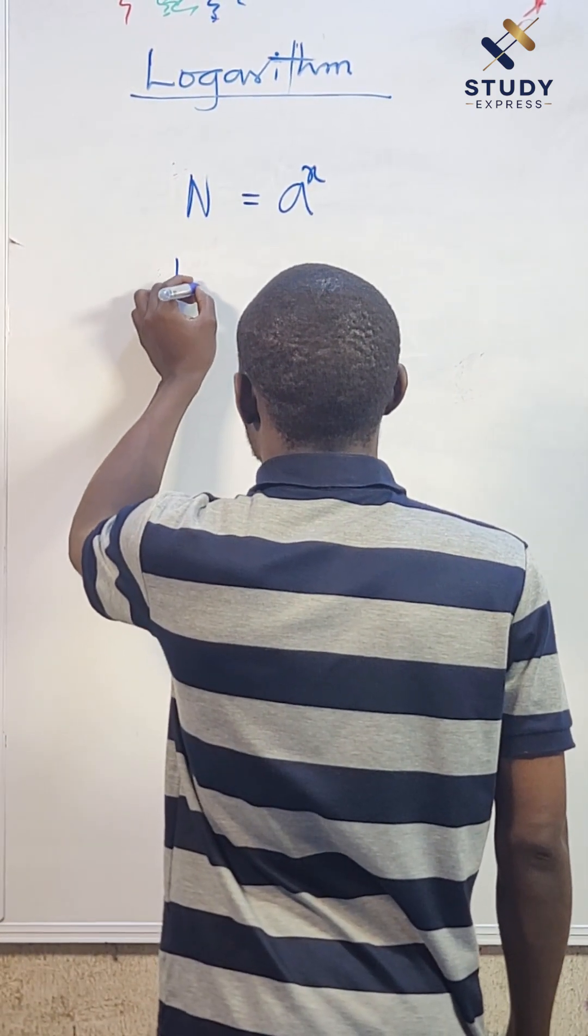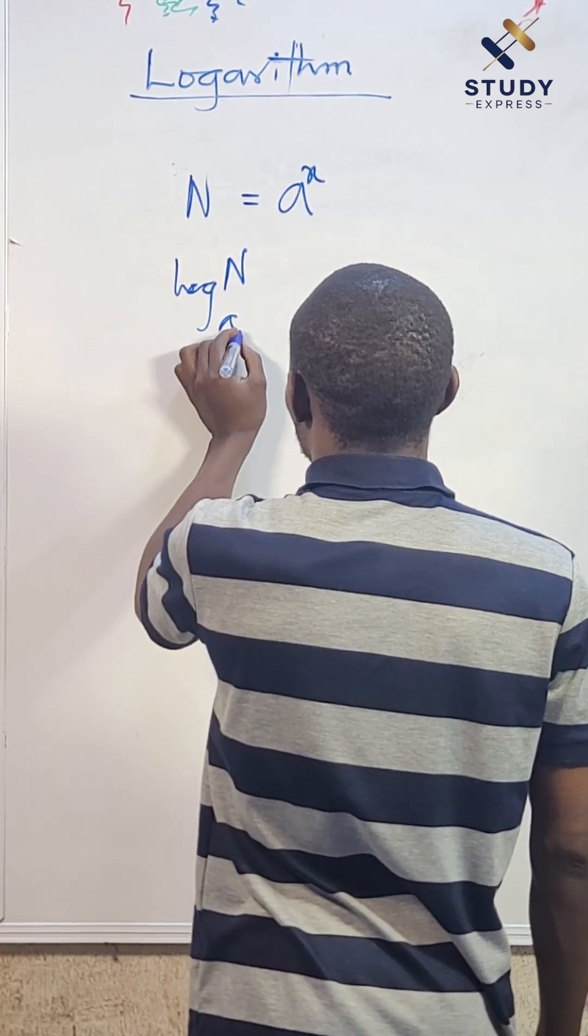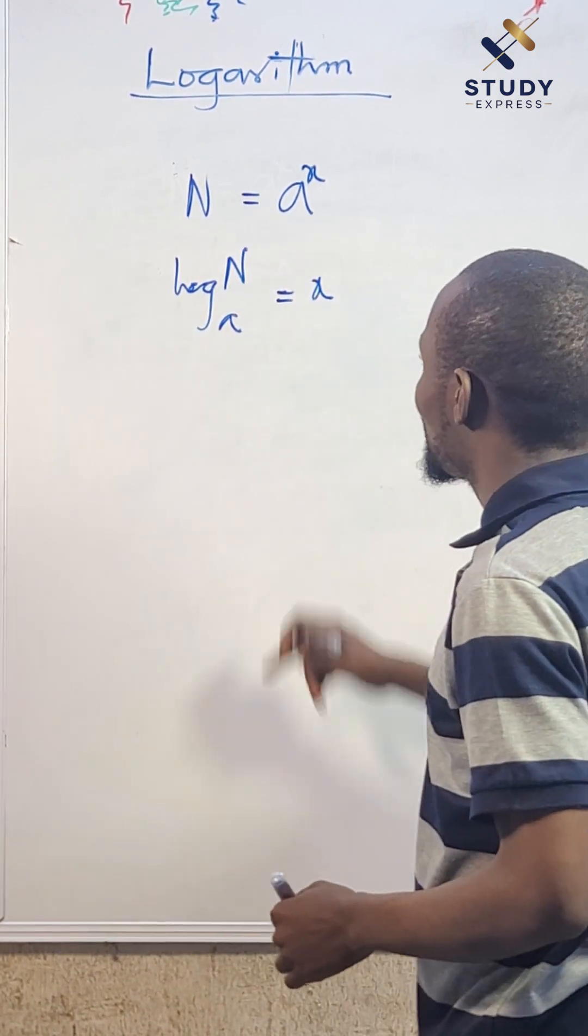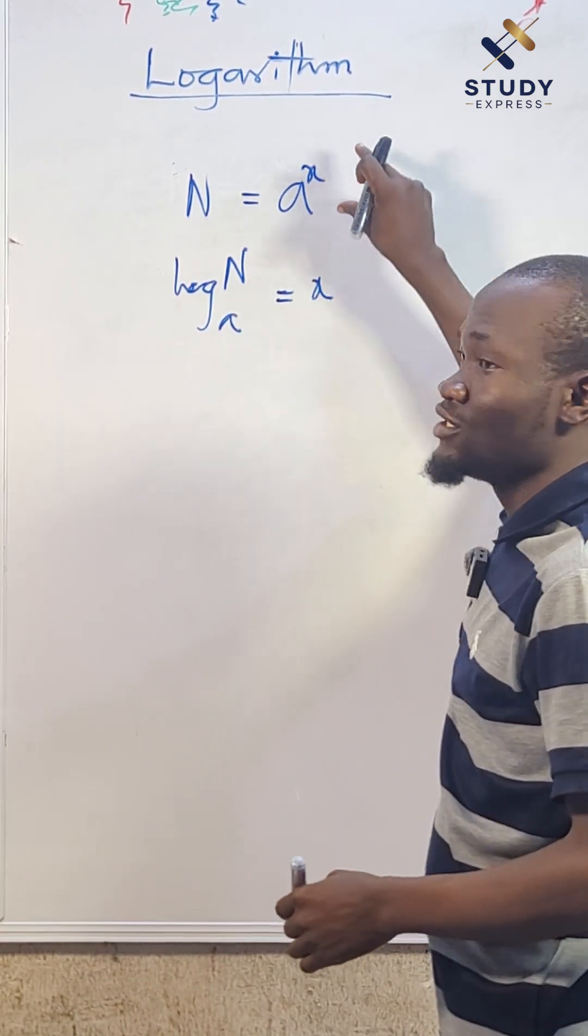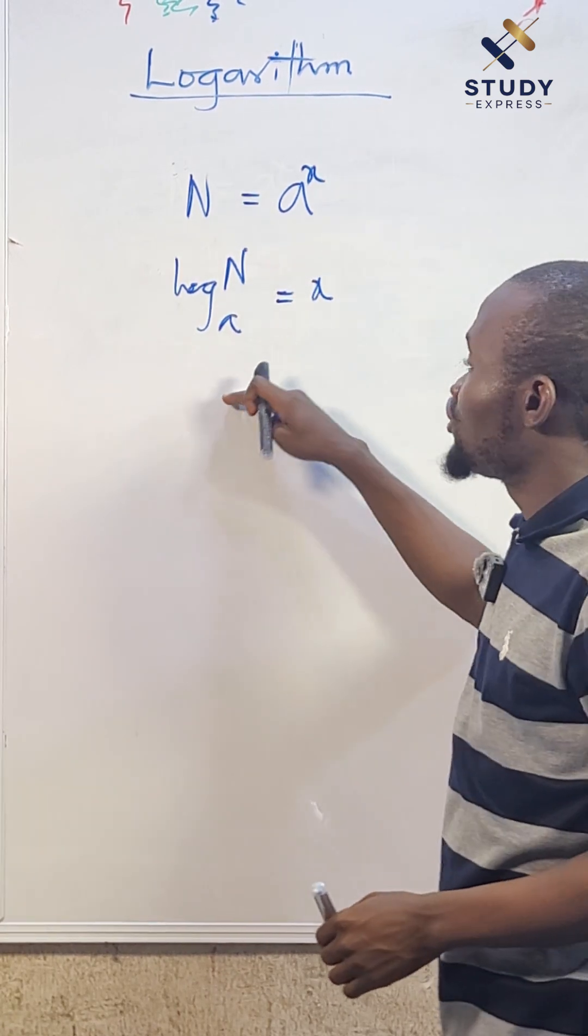We're going to use logarithm, so the log of the number to base a gives us the power. The difference between this and this is that this is the index form, while the logarithmic form - you can easily convert the logarithmic form into an index form.